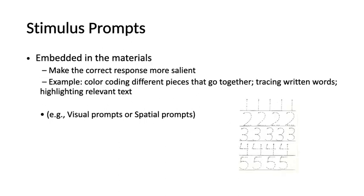Stimulus prompts are cues that make the target behavior more prominent. For example, to encourage someone to push a button, you can make it big and bright. If a child is learning basic colors, you might put the word 'red' in red, 'yellow' in yellow, and 'green' in green. Other examples include tracing written words or numbers as seen in the visual. These are visual or spatial prompts that might support the child.